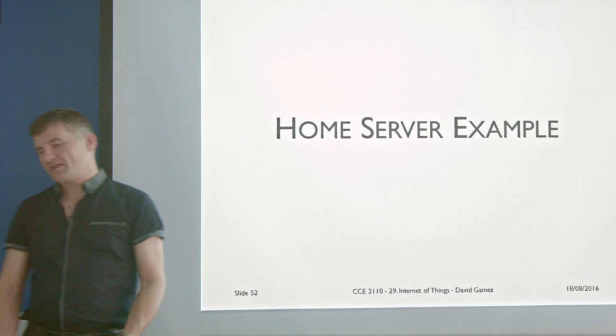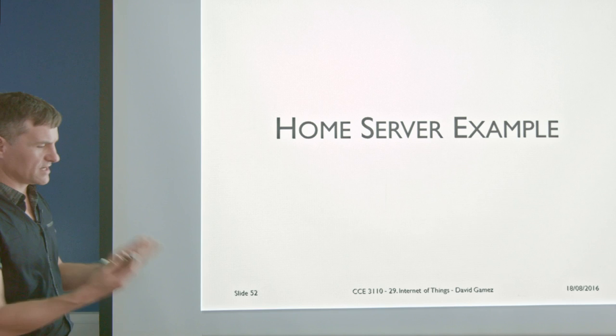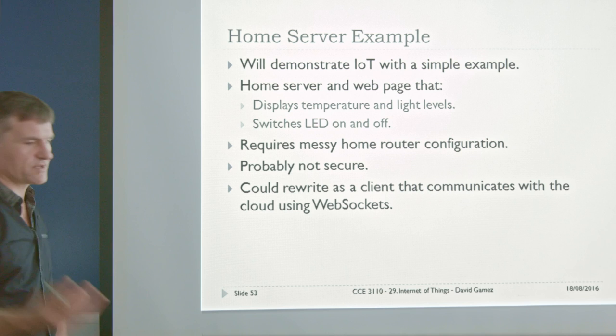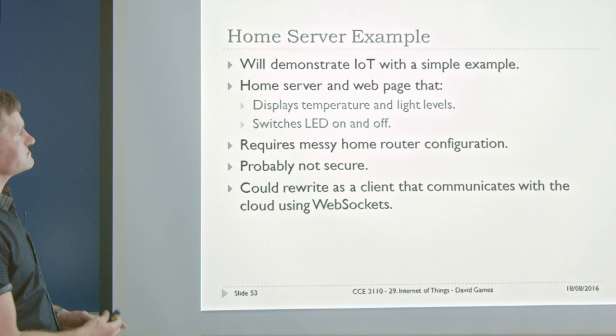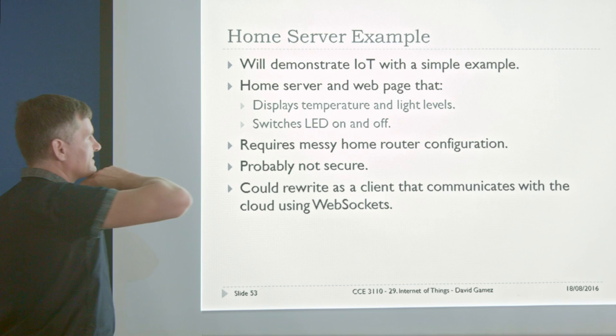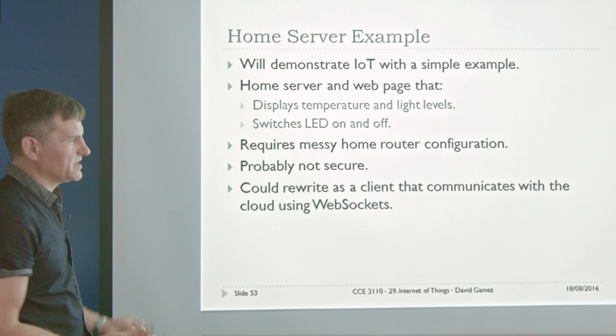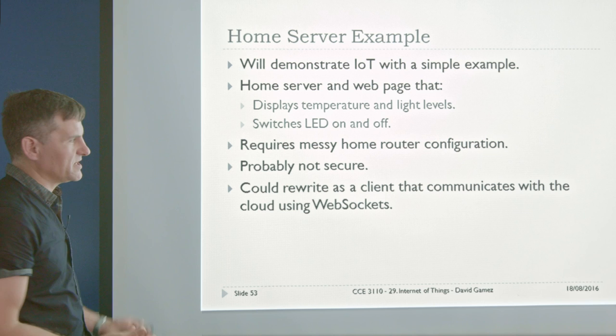Now I'll give a concrete example showing how to do this at home. I'm going to demonstrate the whole chain of command from web browser to server to the actual thing in both directions. I'm going to show how to build a home server and web page that displays temperature and light levels and enables you to switch an LED on and off. It requires messy home router configuration since you're not communicating through the cloud, but it's a cheap and easy way of doing it. It's probably not secure, but once you can switch an LED on and off, you can switch a motor on and off — it's a simple framework that enables all kinds of home automation.